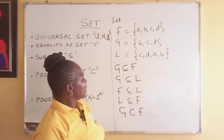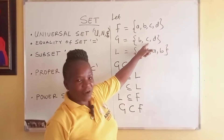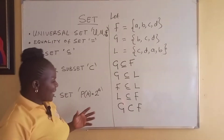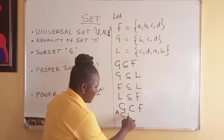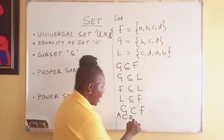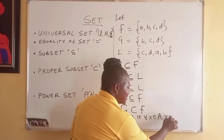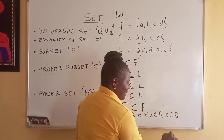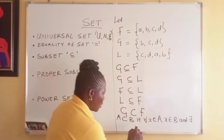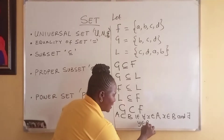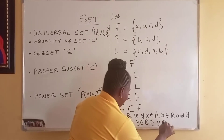Why? Because there is something in F that is not in G — A is not in G. Mathematically, we write: A is a proper subset of B if for all X in A, X is in B, and there exists Y in B such that Y is not in A.